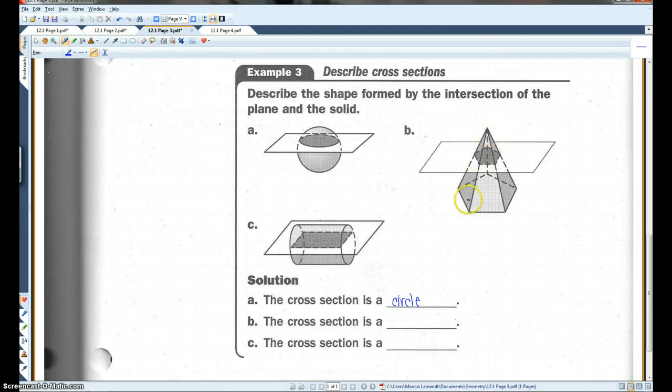For B, we have a pentagonal pyramid intersected by a plane. The cross section is going to be a pentagon. We know it's a pentagon because it has five sides.